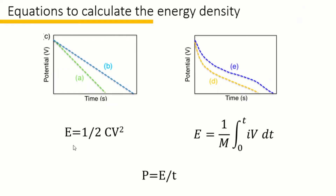In tutorial 4 we already showed how to calculate the energy density and power density of a two-electrode device. In brief, E equal to 1 over 2 Cv squared only works for the linear shaped GCD curve, and integral of current and voltage works for all shapes of GCD curve. For one energy density, there is one corresponding power density, and the power density equals the energy over the discharge time.